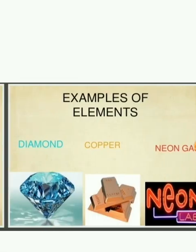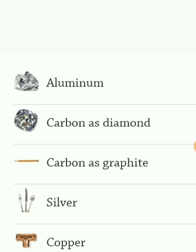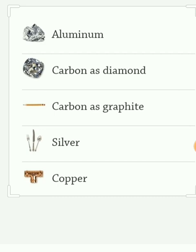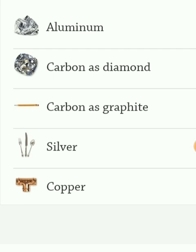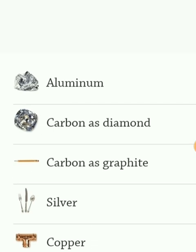Some other examples for elements are diamond, copper, neon gas. Can you guess more examples? Aluminium, carbon as diamond, carbon as graphite, silver, copper. Carbon as diamond means carbon in the form of diamond. Carbon as graphite — inside the pencil we use graphite element, which is made up of carbon. So we say carbon as graphite.